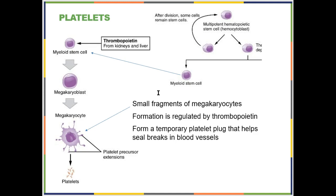Moving on to platelets — you want to know three things. They are small cytoplasmic fragments: the megakaryocyte stays in your bone marrow and little pieces pinch off and exit — those are your platelets. Platelet production is under the control of a hormone called thrombopoietin, which causes the myeloid stem cell to become a megakaryocyte. The function of platelets is to form a platelet plug, which is the first step in hemostasis.